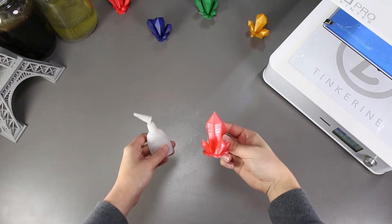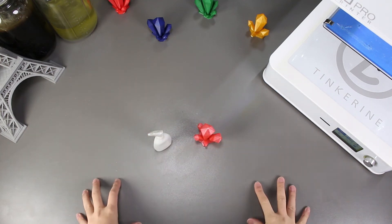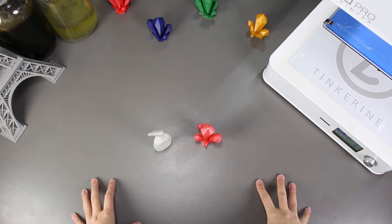Welcome to another episode of Tinkroon Experiments. In this episode, we are going to use superglue to post-process our 3D printed PLA parts.